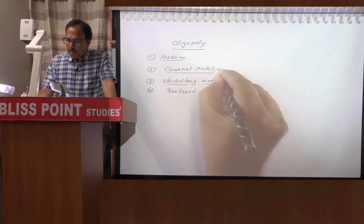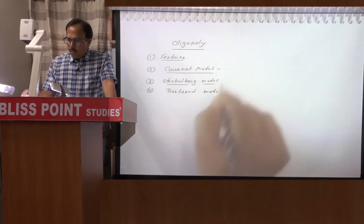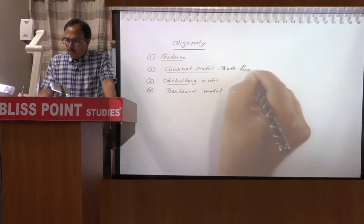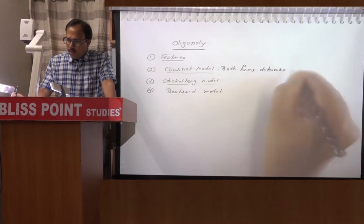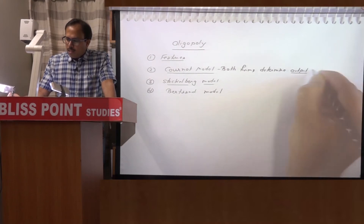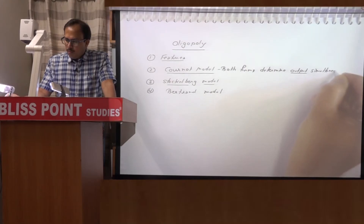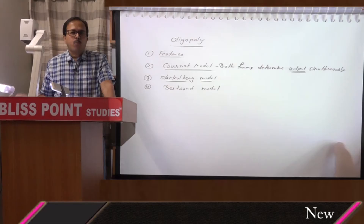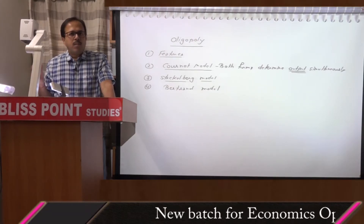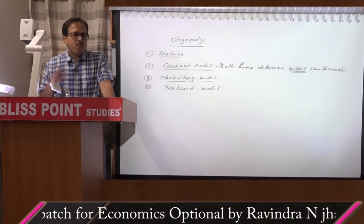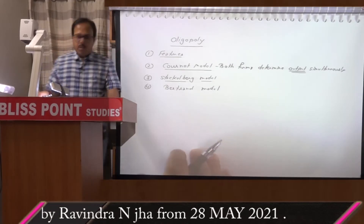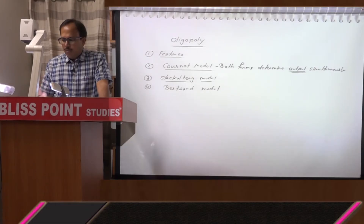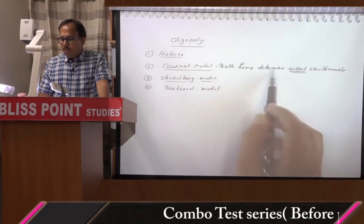In the Cournot model, both firms determine output simultaneously. When one firm chooses its own output, it assumes that the output produced by the other firm will remain constant. Similarly, the other firm assumes the first firm's output will remain constant. So based upon this conjectural variation, we explain the Cournot model. The keyword in the Cournot model is that both firms determine output together.